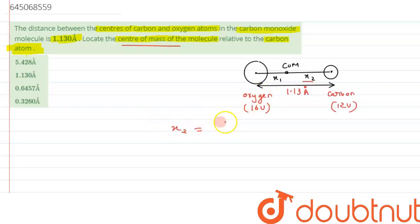In case of two body, the result is useful. To calculate x2, we have to consider mass of the remaining part, that is 16 into the whole of the distance, that is 1.13 into 10 raised to minus 10 meter, dividing by m1 plus m2, that is 16 plus 12, that is 28.